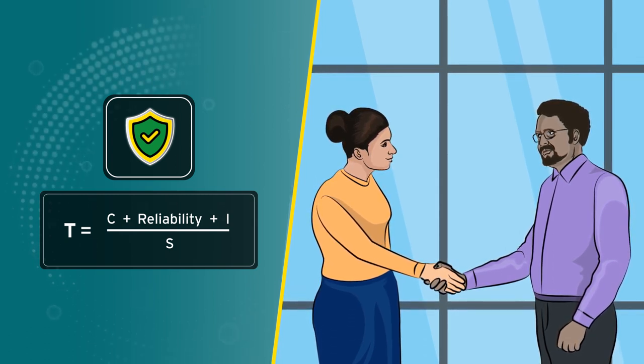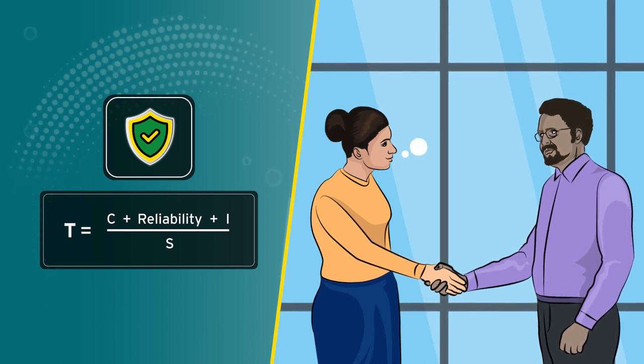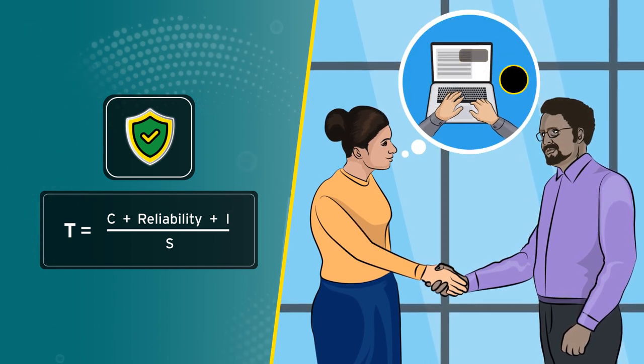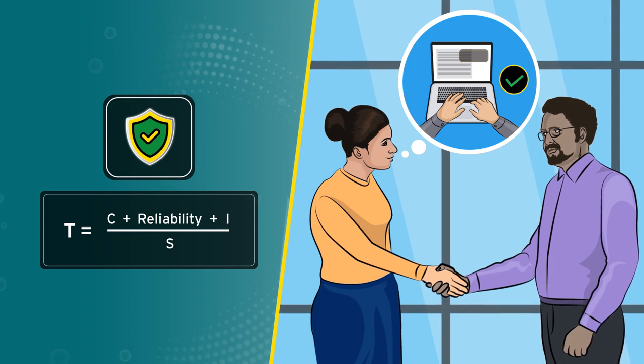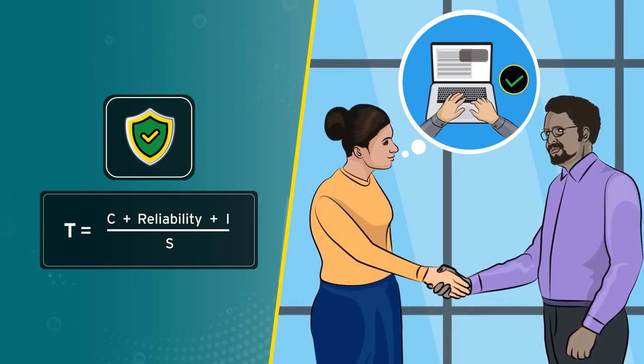While reliability is largely behavioral, it also has emotional elements. For example, does the person understand our frame of reference so that when they promise us something, we are confident they understand what we mean?